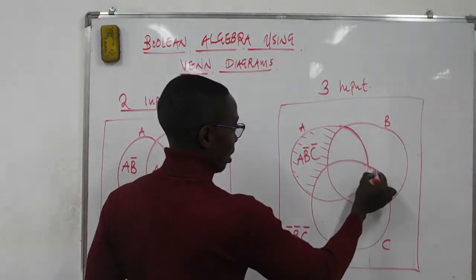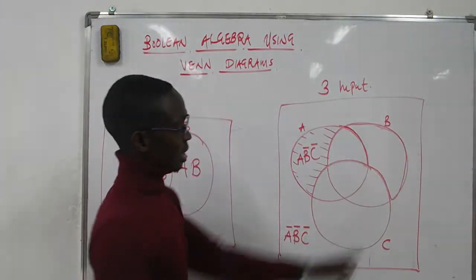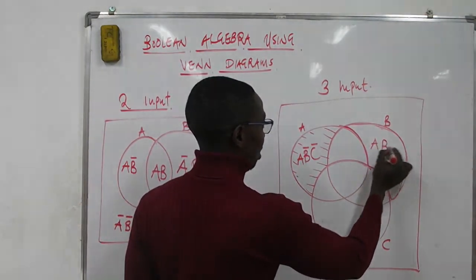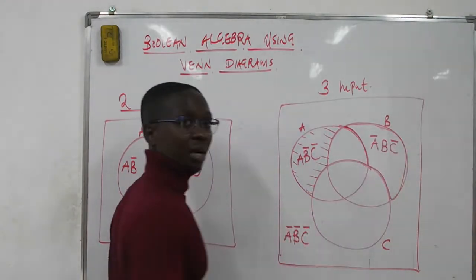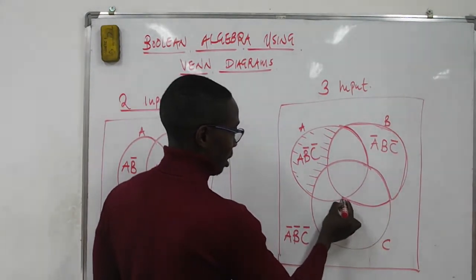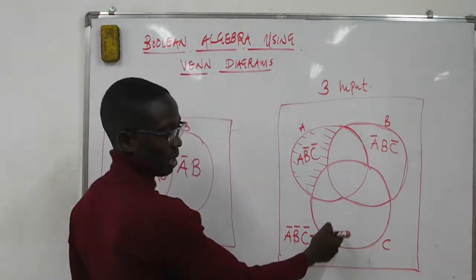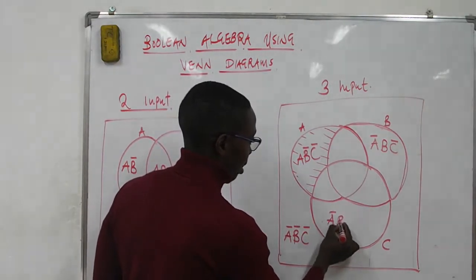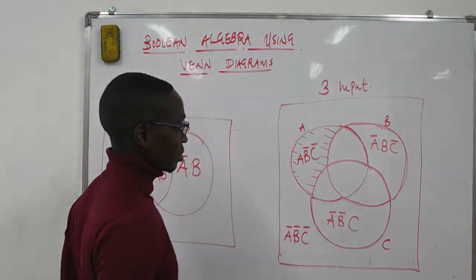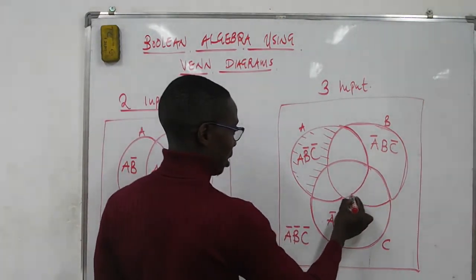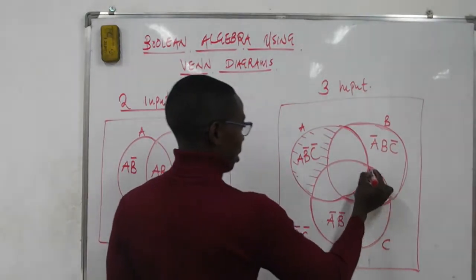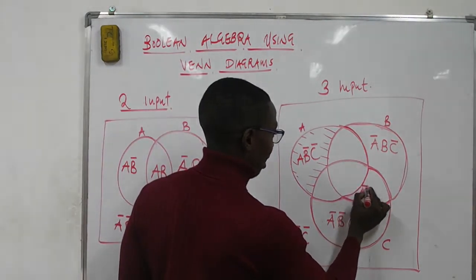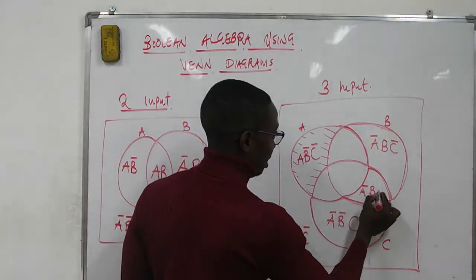When we come to this region here, B appears but A and C don't appear, so you have A bar, B, C bar. Coming to the next region, you have A bar, B bar, and C appears — so this is A bar, B bar, C.